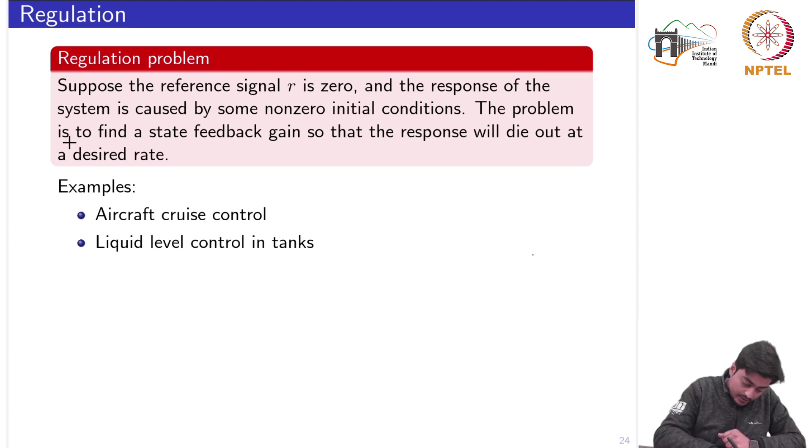This computation of the desired rate basically consists of defining the objectives, the control objective which you can define in terms of the eigenvalues, where you want your eigenvalues of the closed loop system to be placed.